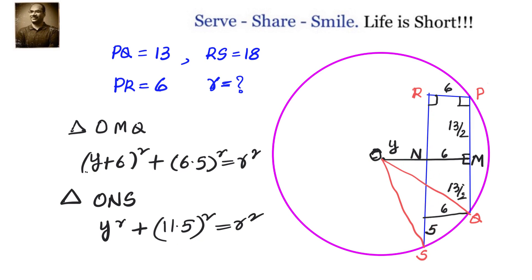So I can go ahead and write down that first triangle OMQ gave us (Y + 6)² + 6.5² = R². And triangle ONS gave us Y² + 11.5² = R². Therefore, (Y + 6)² + 6.5² equals Y² + 11.5².